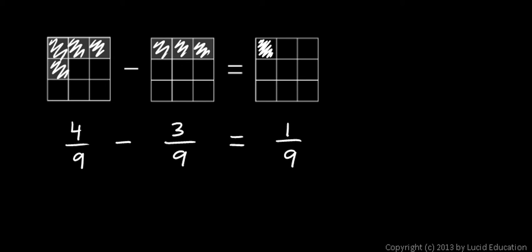Conceptually, the same point I was making about adding fractions applies here. We can simply take four and subtract three, because the four and the three represent the same type of thing. In this case, they represent ninths. Just like having four apples and taking away three apples would leave you with one apple, having four ninths and taking away three ninths would leave you with one ninth. So these are like fractions, fractions that have the same denominator.